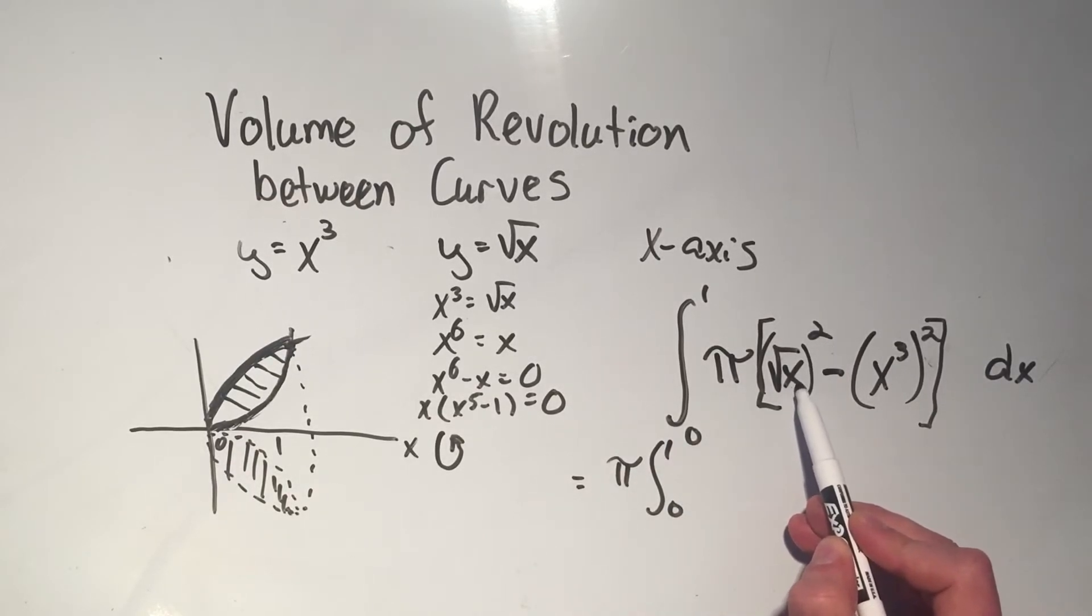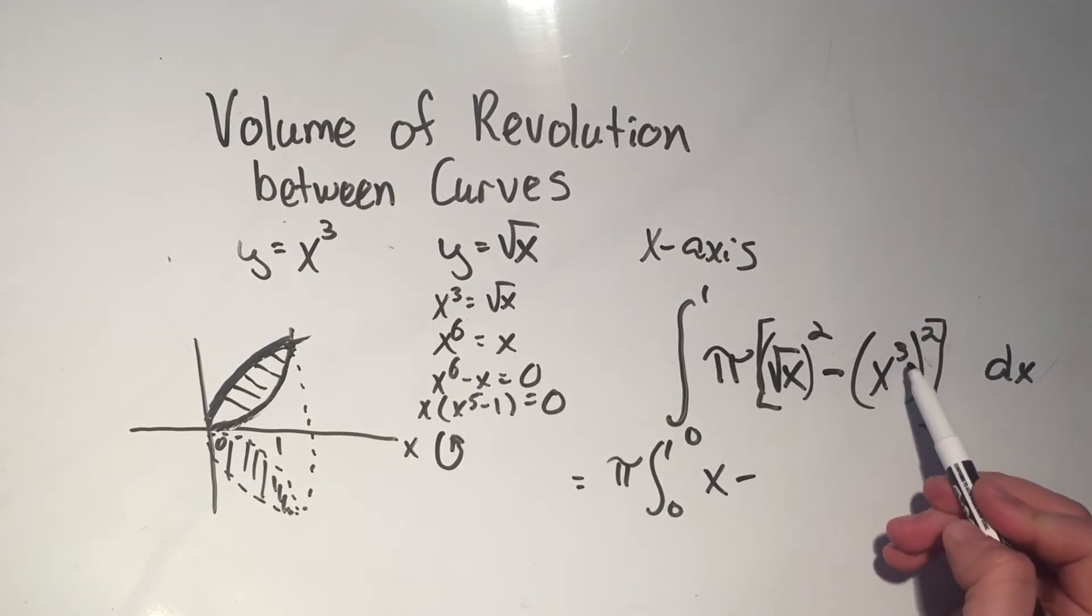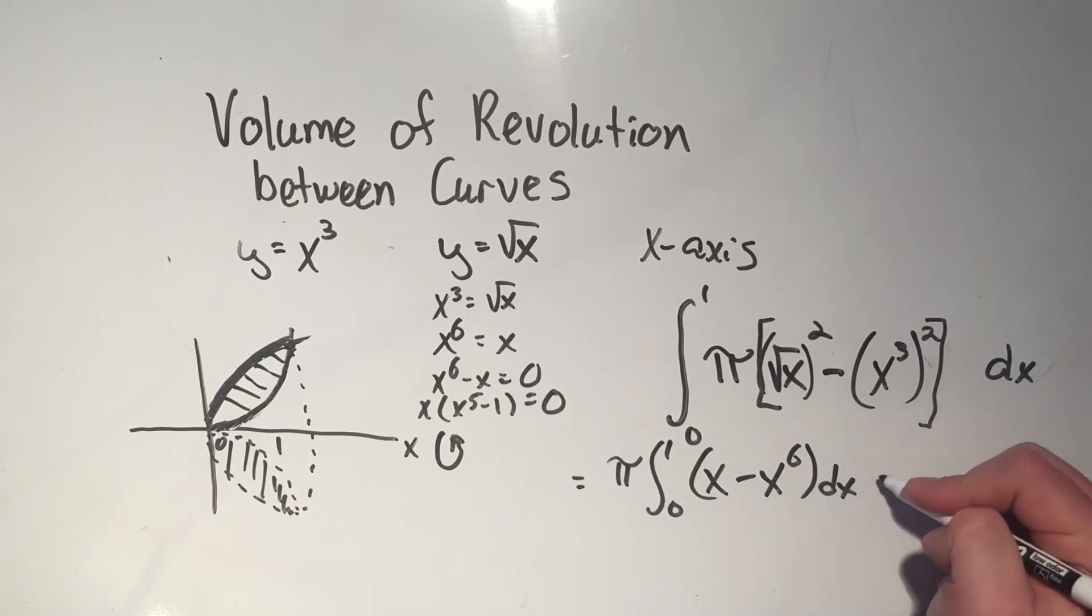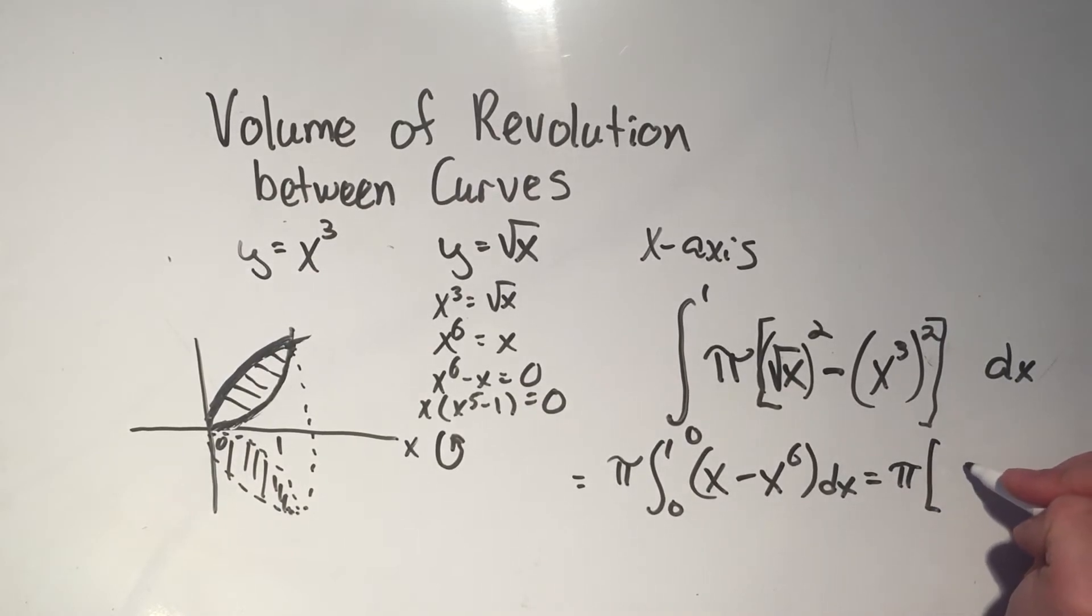If I square a square root, that just leaves me with what's ever on the inside. And if I've x cubed squared, I kind of already did that, that was x to the sixth. And now this is a very easy definite integral to solve. So I'll take the antiderivative, the antiderivative of x, I add one to the power, divide by the new power. The antiderivative of minus x to the sixth, I add one to the power, divide by the new power. Write my evaluation bar from zero to one.